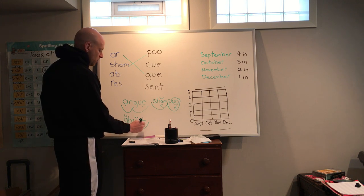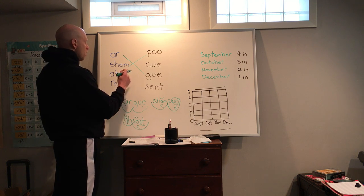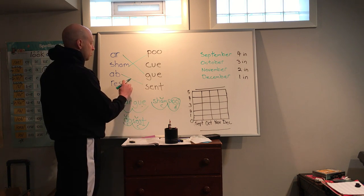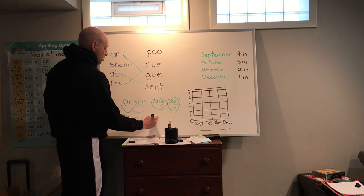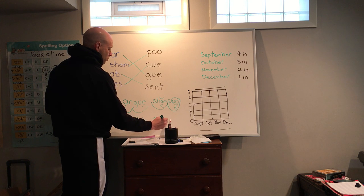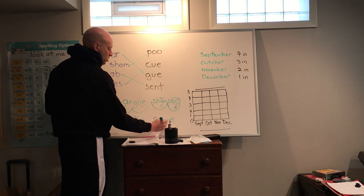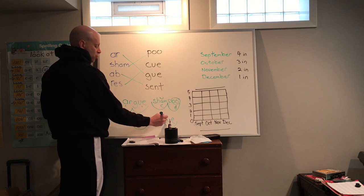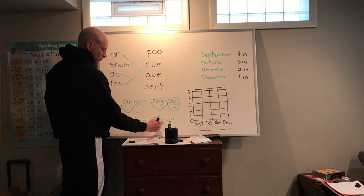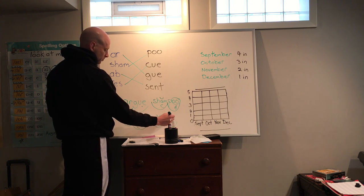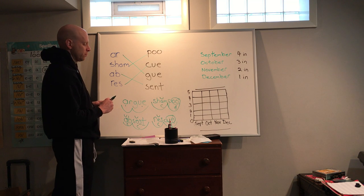We could underline our blend there too. And then, so if we've done absent, it only gives us one more. Res-cue. Res-cue. We're going to split it between the two consonants. Short E. Closed syllable. U-E. Double vowel team.